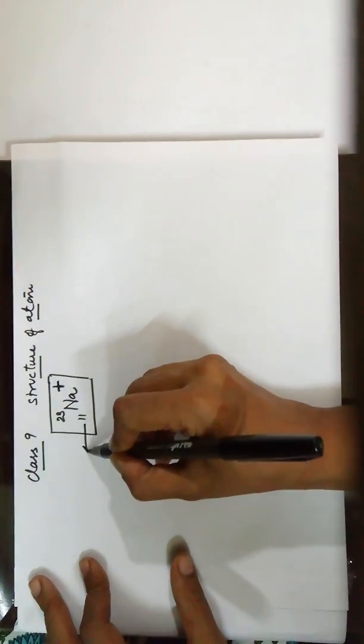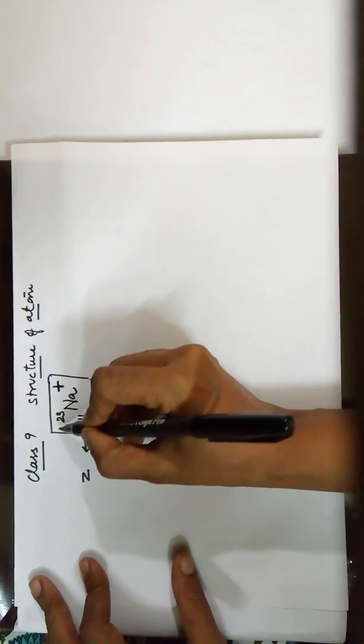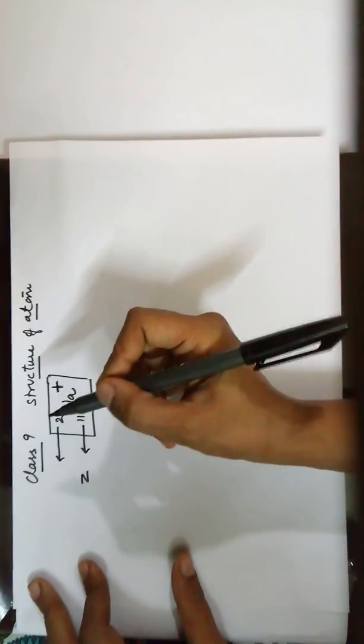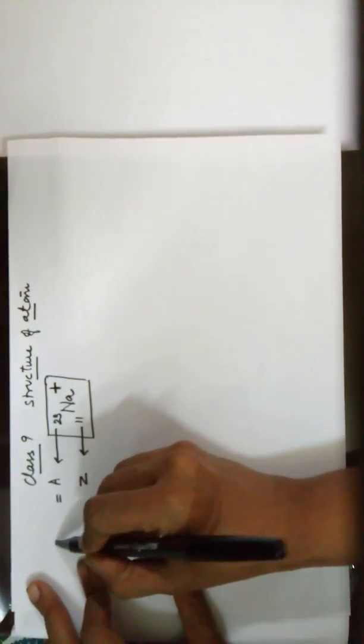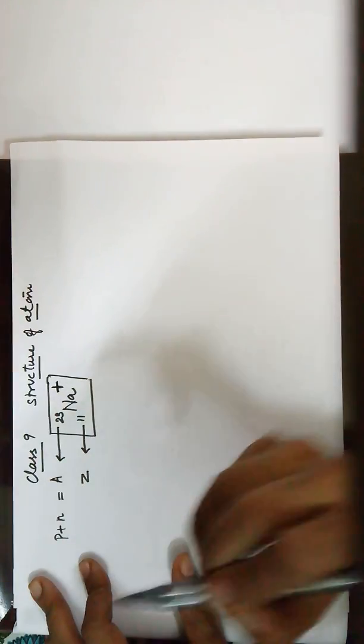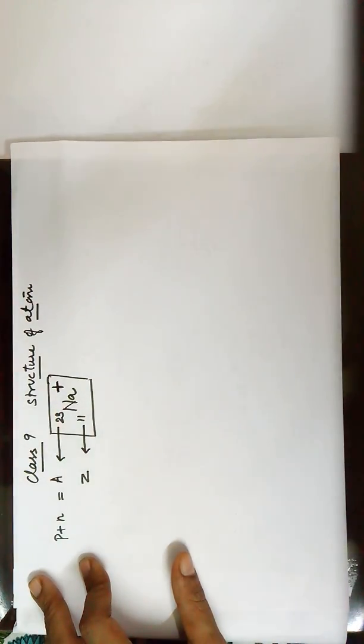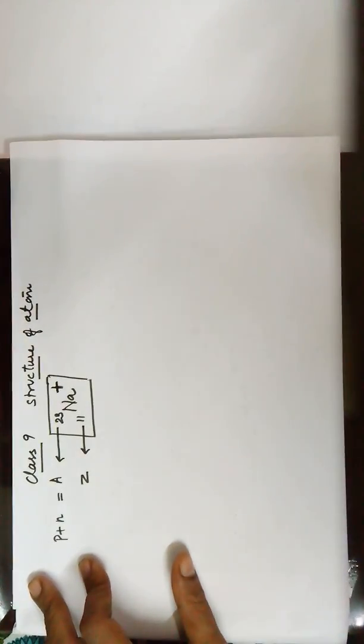The number written on the left bottom stands for the atomic number. On the left top stands for the mass number. Mass number is equal to the number of protons plus the neutrons, as these are the heaviest subatomic particles in an atom.